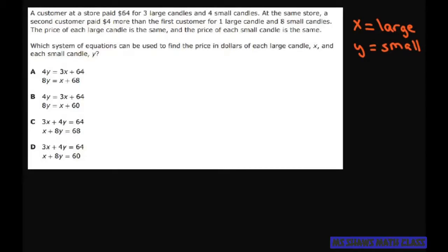All right, so what we're going to do is we're going to write it just the way we see it. So customer one, he or she paid three per large and four for the small and that was $64.